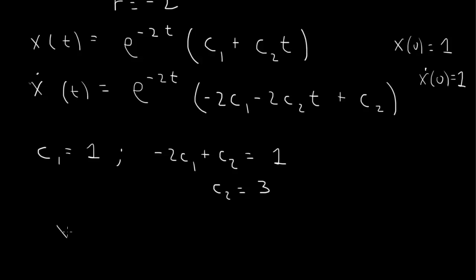So what we found was the solution here to the initial value problem is x of t equals e to the minus 2t times c1, which is 1, plus c2 times t, which is plus 3t. And that solves the problem. Thank you.